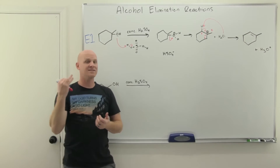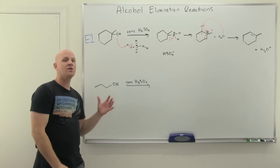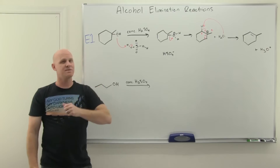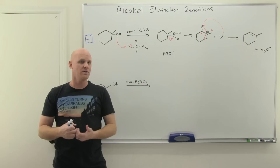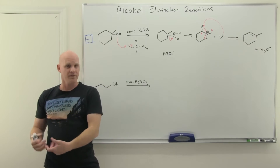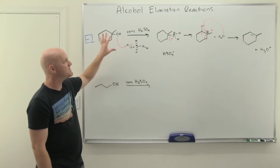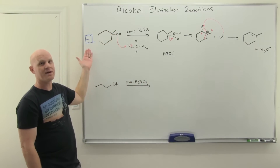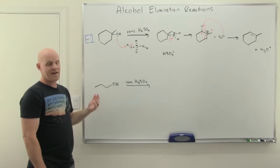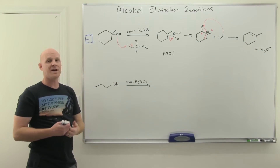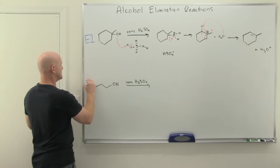E1 works great for tertiary and secondary alcohols. It doesn't work well for primary, but if we do this with a primary alcohol it still works — it goes by the E2 mechanism instead. So the tertiary or secondary alcohol elimination goes by E1, and for a primary, it can't go by E1 because you can't form a primary carbocation, so it goes by E2.